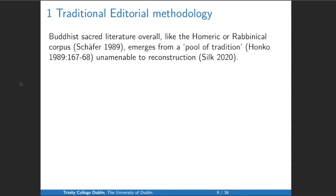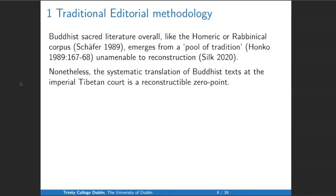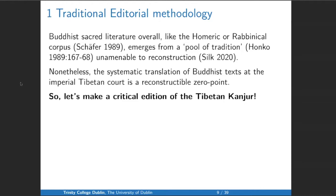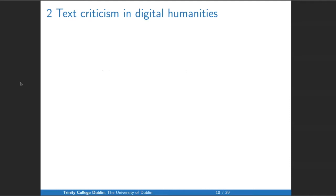Buddhist sacred literature overall — like the Homeric or rabbinical corpora — emerges from a pool of tradition unamenable to reconstruction. Nonetheless, the systematic translation of Buddhist texts at the Tibetan imperial court is a reconstructable zero point, which is to say it should be possible to do a critical edition of the Kanjur. So let's make a critical edition of the Tibetan Kanjur.